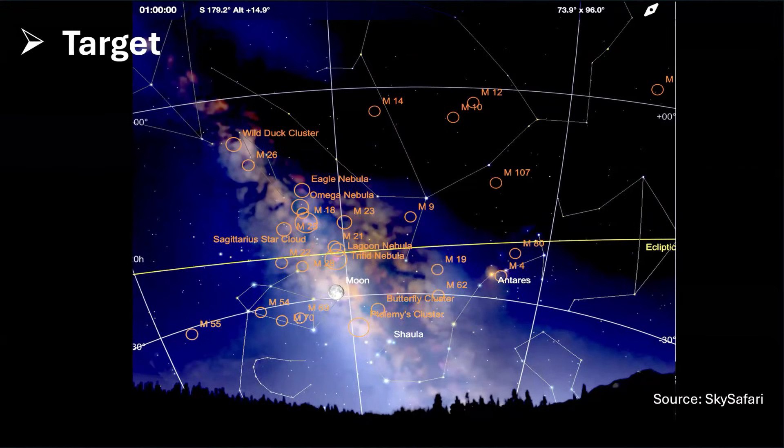This is the location of the target M16, the Eagle Nebula, which is about 20 to 30 degrees above the horizon at the end of June, beginning of July. I'm imaging under Bortle 7 skies, so this is a little bit challenging.